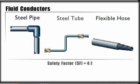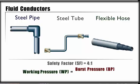A safety factor of 4 to 1 is recommended on the pressure rating of the plumbing material. To determine the working pressure of the conductor, we must take the rated burst pressure and divide by the safety factor of 4.